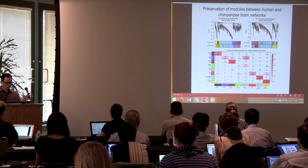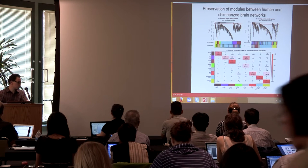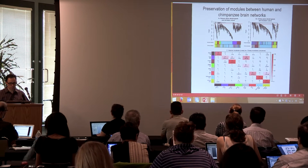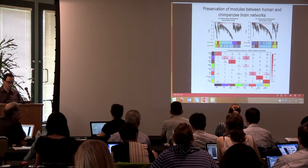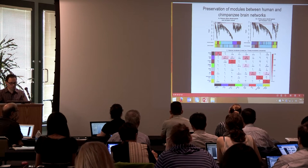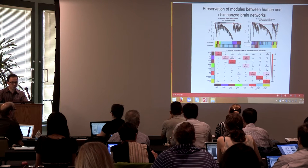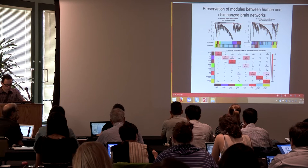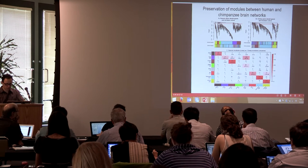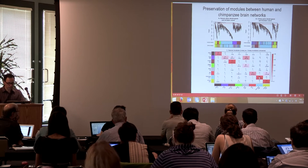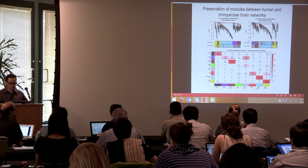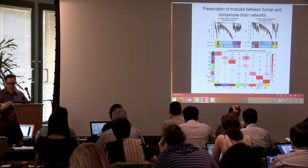When you have two module assignments, you can cross-tabulate them. The rows represent modules from the human brain, the columns represent modules from the chimpanzee brain, and the entries show the number of overlapping genes, along with a hypergeometric test p-value. For the turquoise human and chimpanzee modules, there are 747 overlapping genes out of 1,001 total genes in the human turquoise module.